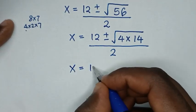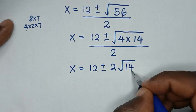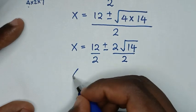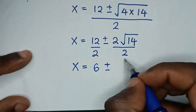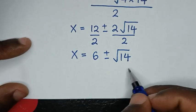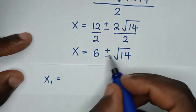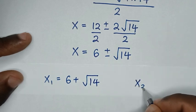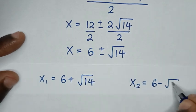So it will be x is equal to 12 plus or minus square root of 4, which is 2, times square root of 14. Then we divide by 2 in the numerator and denominator. So x is equal to 12 divided by 2, which is 6, plus or minus — 2 and 2 cancel — so it will be plus or minus square root of 14. From here we have two values of x: the first value x₁ is equal to 6 plus square root of 14, and the second value x₂ is equal to 6 minus square root of 14.